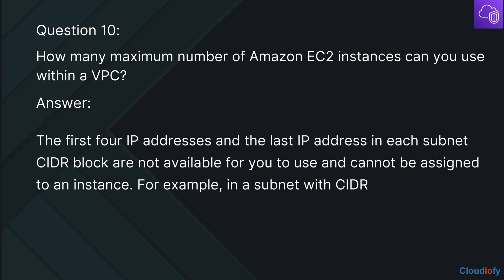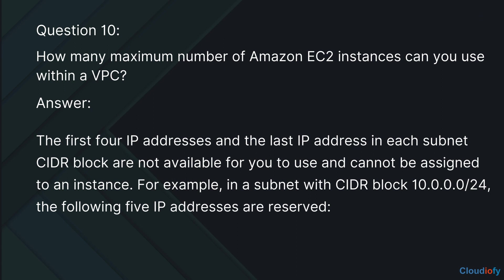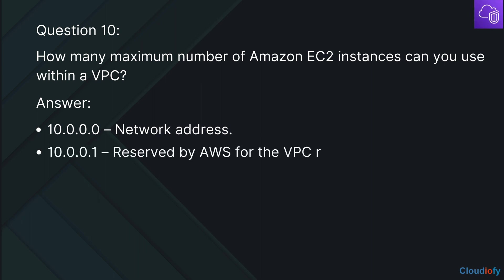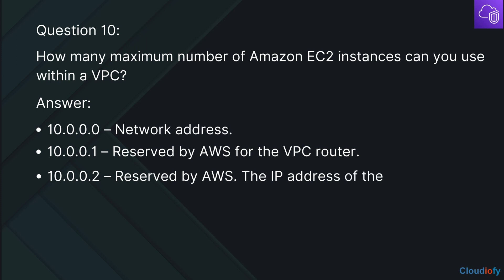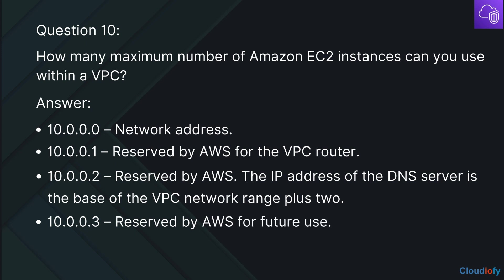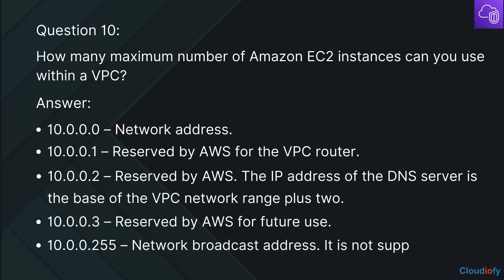For example, in a subnet with CIDR block 10.0.0.0/24, the following five IP addresses are reserved: the network address, the VPC router address, the DNS server address (base of the VPC network range plus 2), one address reserved by AWS for future use, and the network broadcast address — noting that broadcast is not supported in a VPC.